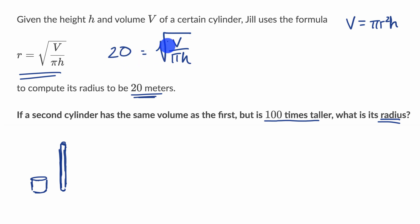So we know that 20 meters equals this. Now we're talking about a situation where the height is 100 times taller. So this other cylinder is going to have a radius of square root of V, which is going to be the same. Pi doesn't change. And now instead of h, we have something that is 100 times taller, so we could write that as 100h.